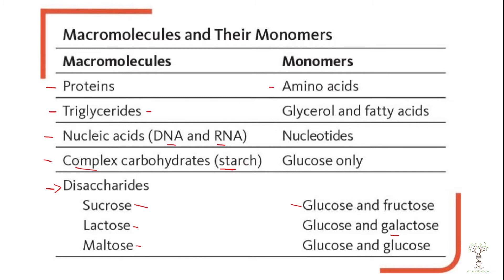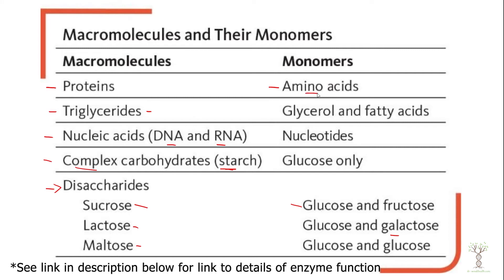When we break down proteins they are broken down into amino acids — the building blocks. When we chemically break down triglycerides we release glycerol molecules and fatty acid chains. When we break down DNA and RNA we get nucleotides. Starchy foods are composed only of glucose. As a reminder from the last video, the stomach produces pepsinogen, which is cleaved by hydrochloric acid to become pepsin, and pepsin will digest proteins.